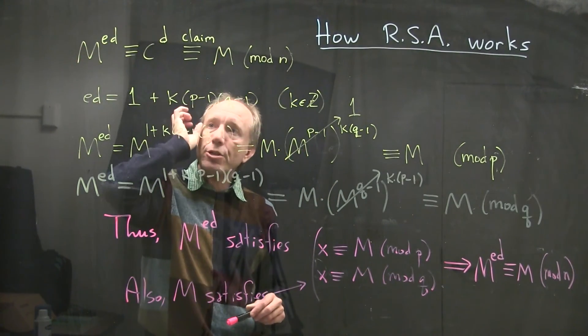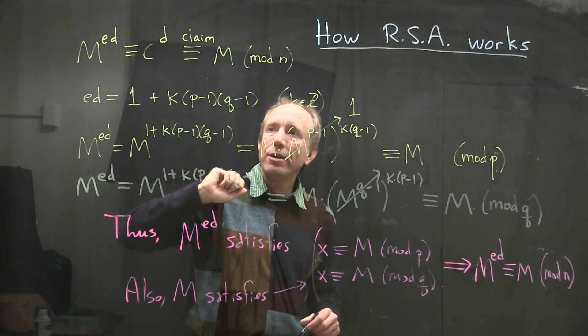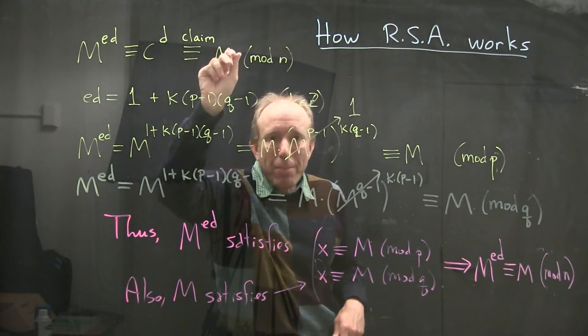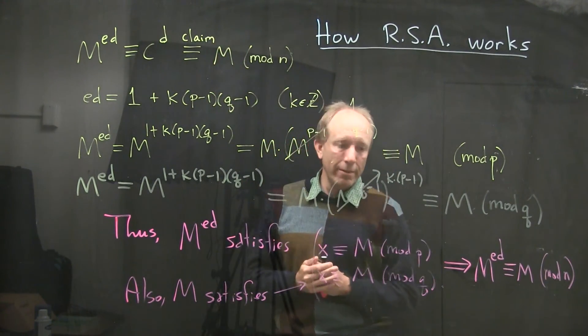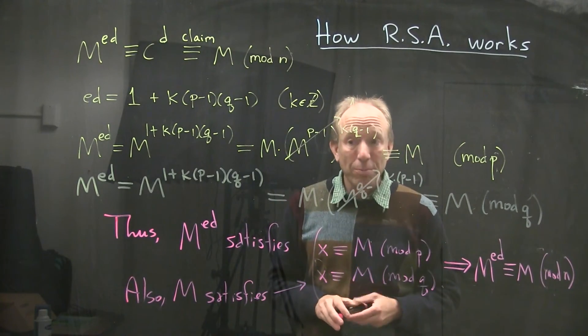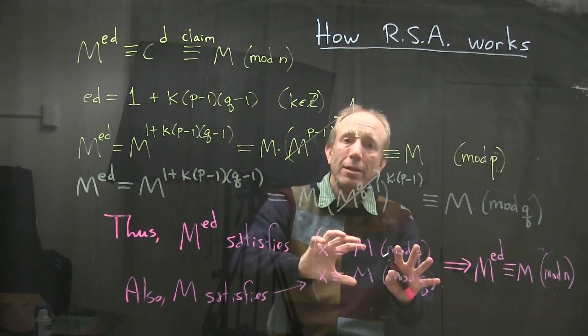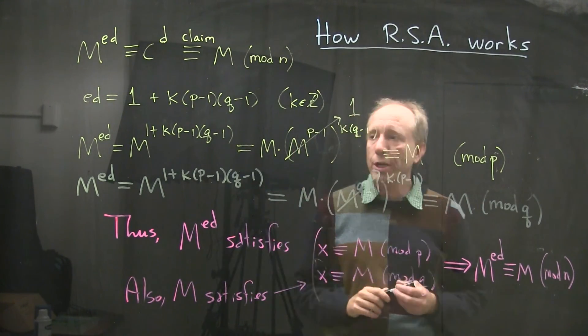That if I take my message, I raise it to the E power first, and then raise that to the D power, that I get back to M again. This is showing the reason that that works from a mathematical point of view. We use the Chinese remainder theorem, specifically the uniqueness part of the Chinese remainder theorem.